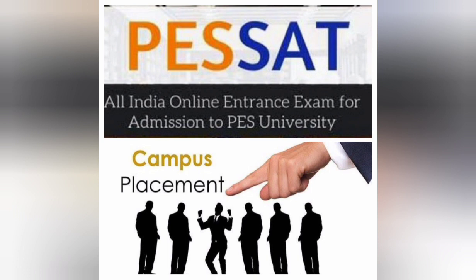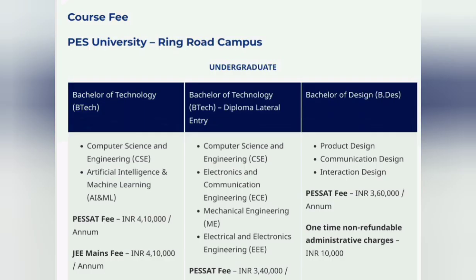This covers the complete fee structure for the Ring Road campus, which is PES University's main campus. On the bachelor's side, they offer three programs: BTech, BTech diploma lateral entry, and B.Des. In BTech there are five streams. Starting with BTech in CSC, which is one of their most prominent branches — they have two options: CSC and AIML. Through PESET, the fees for BTech in these two branches is 4 lakh 10 thousand per year.